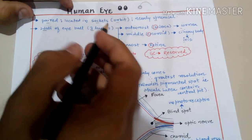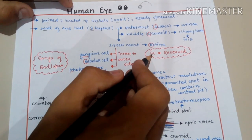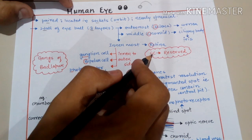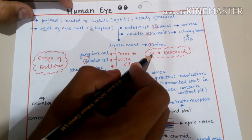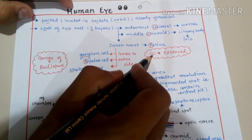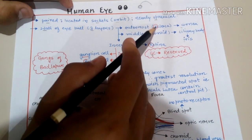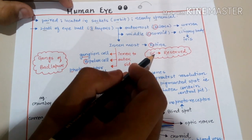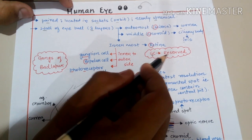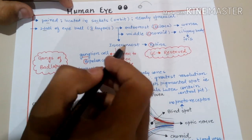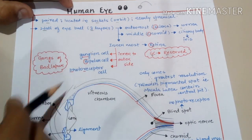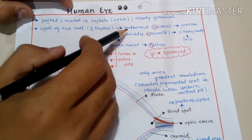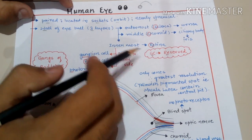There is a trick to memorize all three wall layers of the eyeball: 'SC Reserved.' Just as some seats are reserved for SC candidates in pre-medical tests, this trick helps us remember: S for sclera (outermost), C for choroid (middle), and 'Reserved' — RE — for retina (innermost layer).